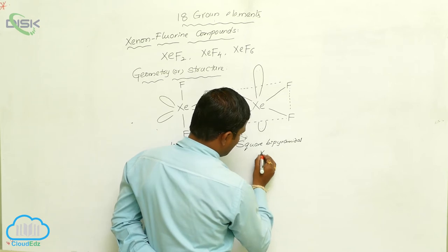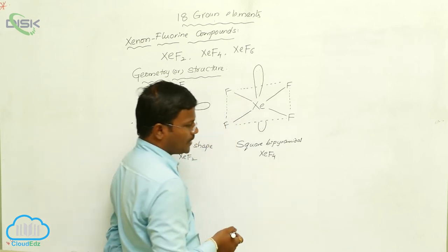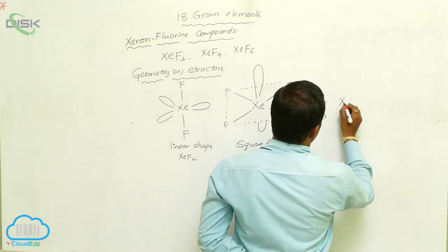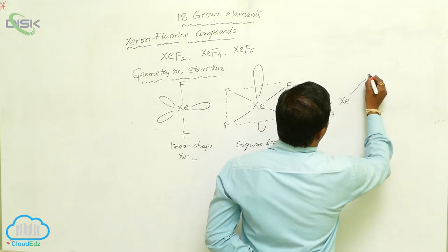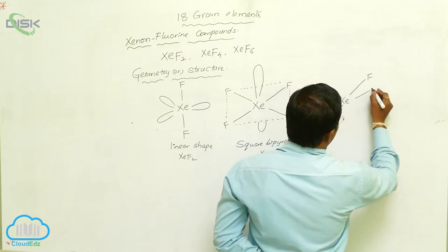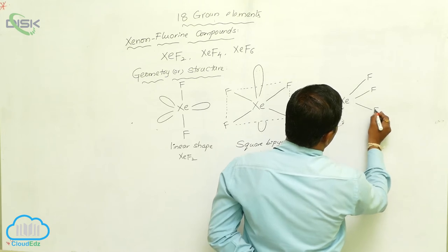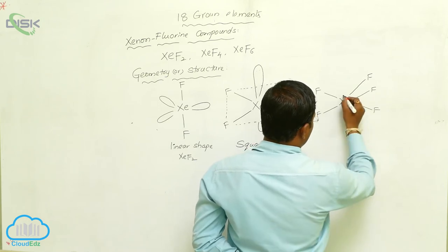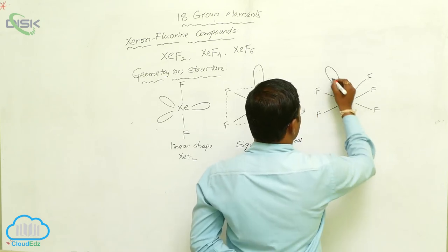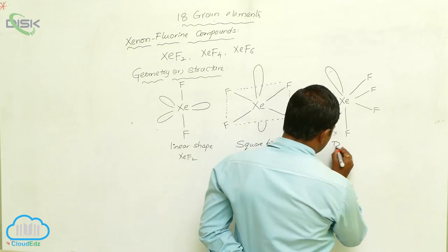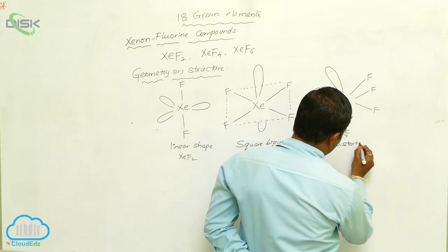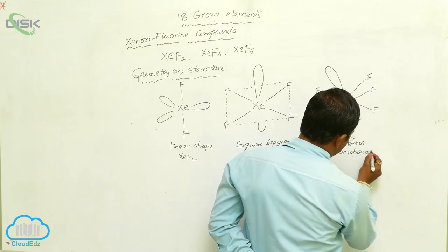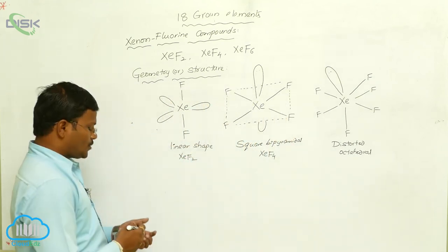Similarly, xenon hexafluoride, XeF6, will show distorted octahedral geometry with six fluorines and non-bonding pair of electrons. It is called distorted octahedral geometry. This is about the topic related to xenon fluoride complexes.